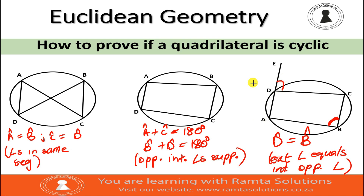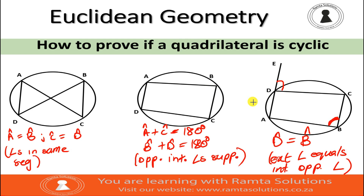So to rephrase: if you are given quadrilaterals like these and you find that angle A equals angle B and angle C equals angle D, you can say this is a cyclic quadrilateral — because angles in the same segment. If opposite interior angles are supplementary, your quadrilateral is cyclic. Lastly, if the exterior angle equals the interior opposite angle, your quadrilateral is cyclic. All right guys, it's a wrap — see you next time, bye bye.